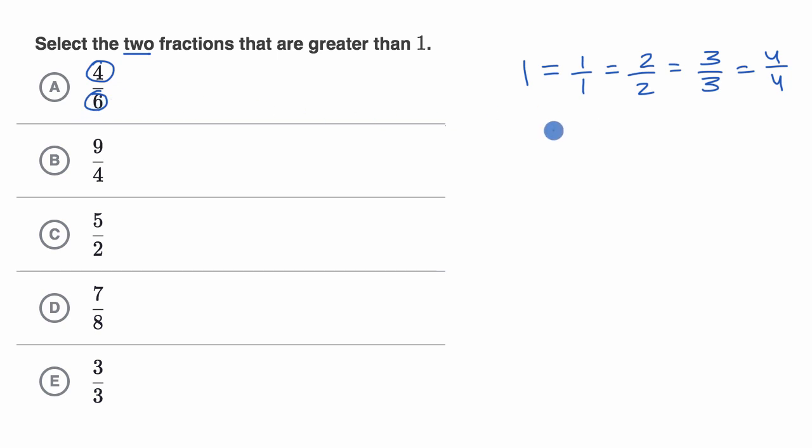If you wanted in terms of sixths, one would be equal to six sixths. And so if whatever we have up here is larger than the denominator, so if we have seven sixths, or if we were to have maybe five fourths, notice the numerator is larger than the denominator. These are all situations when we are greater than one.